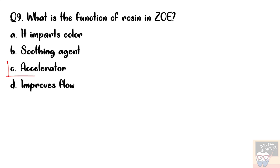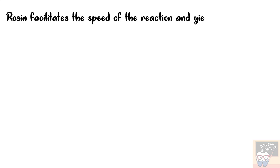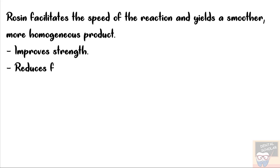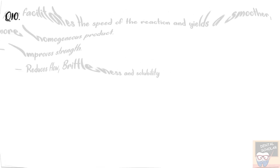The answer to this question is option C, accelerator. Rosin facilitates the speed of the reaction and it yields a smoother, more homogenous product. It improves the strength of zinc oxide eugenol and reduces flow, brittleness, and solubility of zinc oxide eugenol. Hence the answer is option C.